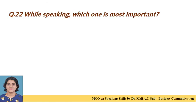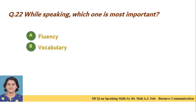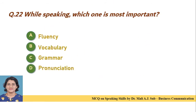Question 22: While speaking, which one is most important? Option A: fluency. Option B: vocabulary. Option C: grammar. Option D: pronunciation. Correct answer is Option C — grammar is most important while speaking.